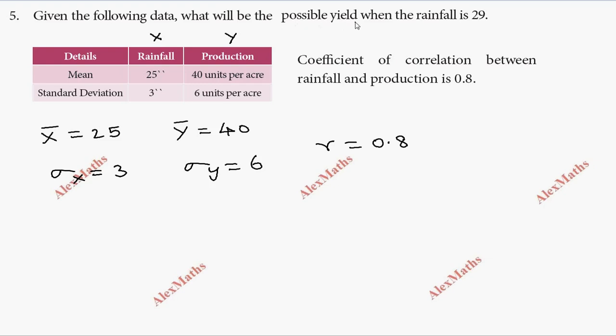What will be the possible yield when the rainfall is 29? This is the possible yield in production. So when x equals 29, find the value of y.